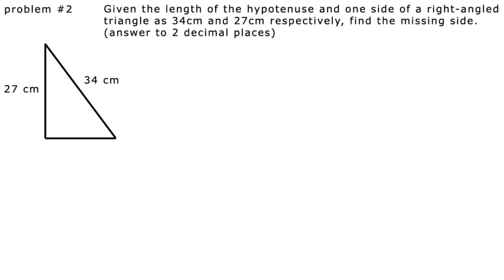Problem number two. Given the length of the hypotenuse and one side of a right-angled triangle as 34 cm and 27 cm respectively, find the missing side. Answer to two decimal places.